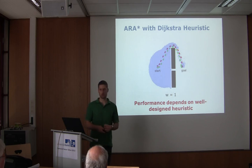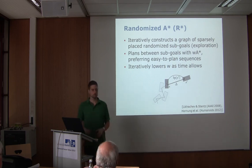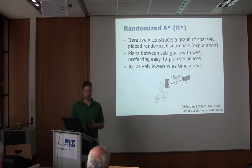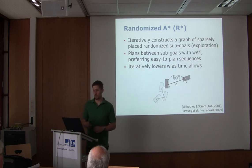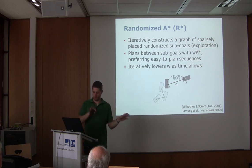Now let's get to Randomized A* (R*), designed particularly to tackle the weakness of heuristic dependency. We don't want to redesign heuristics for every kind of environment. Randomized planners like RRTs and PRMs don't face these problems because they explore the state space broadly. The idea with R* is to borrow some ideas from RRTs — random expansion — and use them in anytime suboptimal search, giving us guarantees on solution optimality.